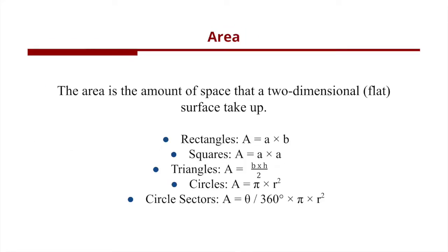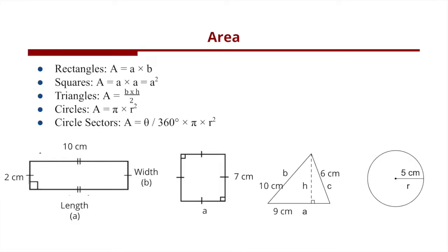The area is the amount of space that a two-dimensional surface takes up. The area formula of a rectangle is length times width. The area formula of a square is side length multiplied by side length, which is side length squared. The area formula of a triangle is base times height divided by 2. The area formula of a circle is pi times the radius squared.